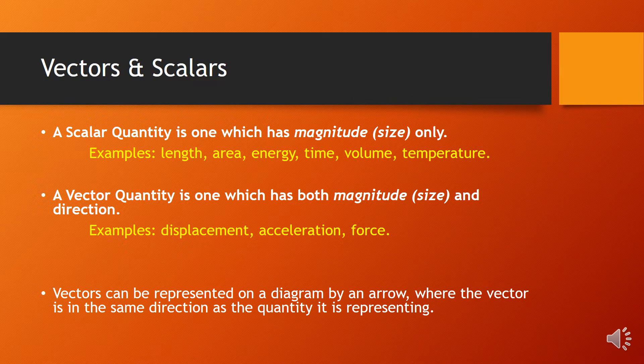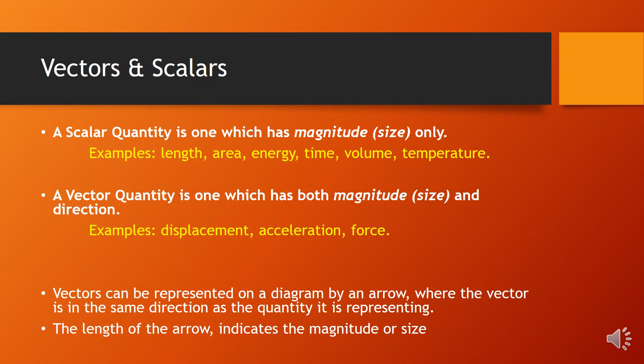Vectors can be represented on a diagram by an arrow where the vector is in the same direction as the quantity it is representing, and the length of the arrow indicates the magnitude or the size of the vector.